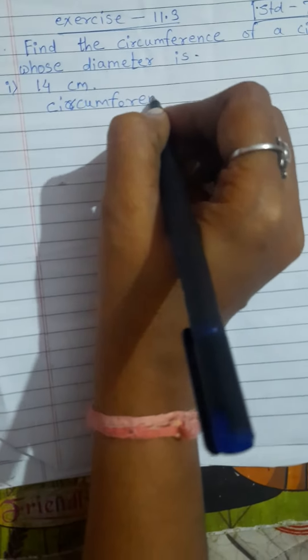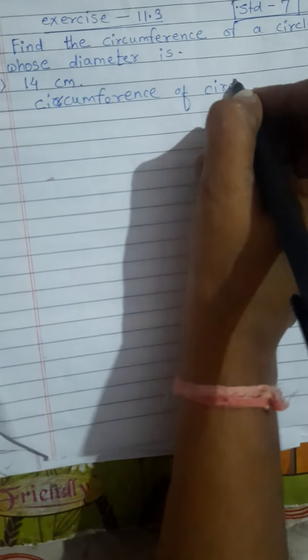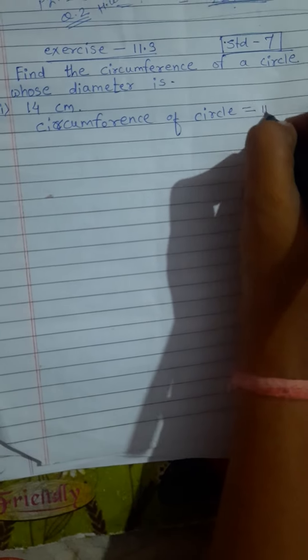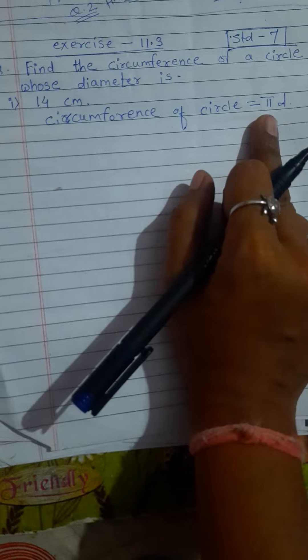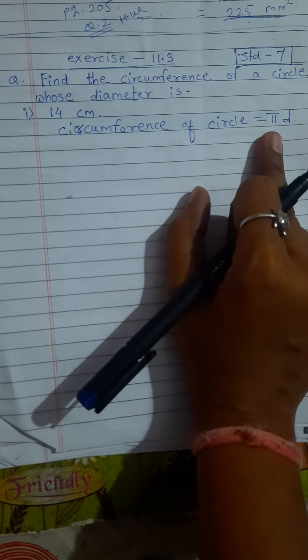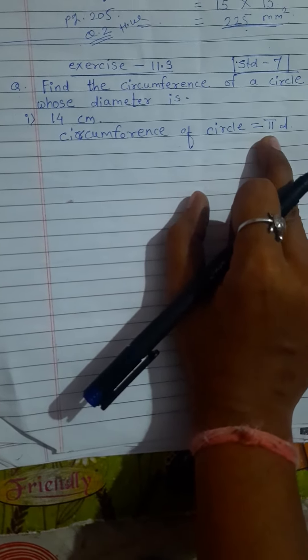Circumference of circle is equal to π d. That is the formula. We know the value of π, π is equal to 22 by 7.